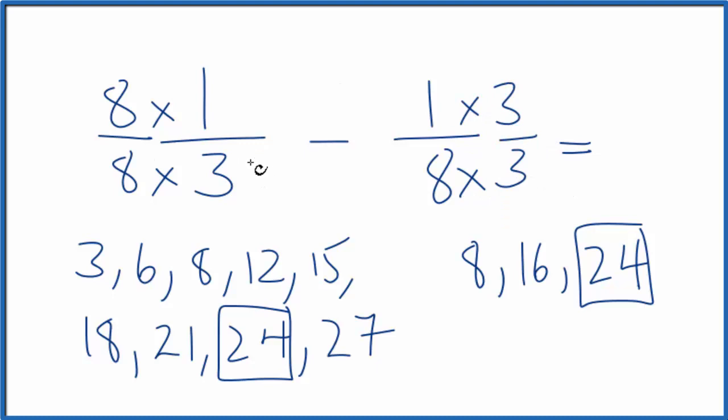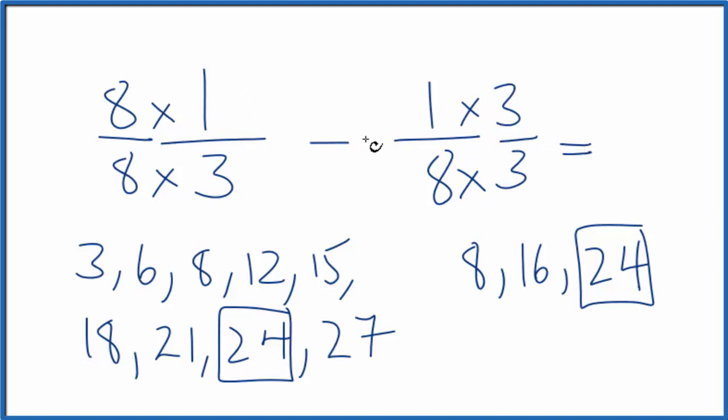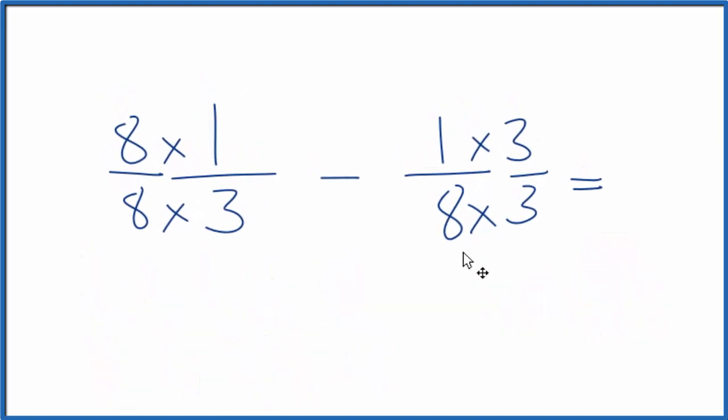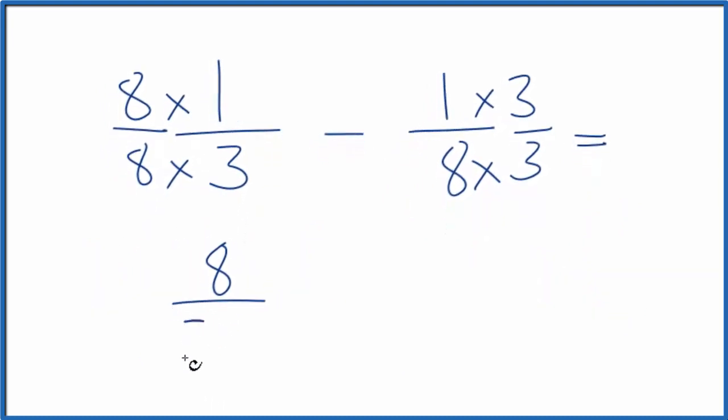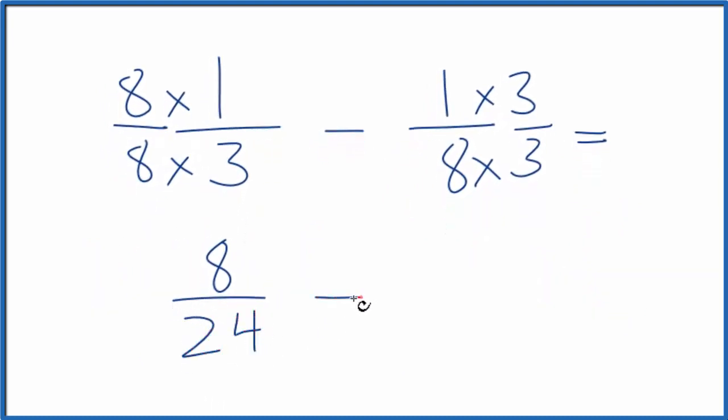So now we can do our multiplication and then subtract the fractions one-third minus one-eighth. 8 times 1 is 8. 8 times 3, that's 24. So there's our denominator, minus 1 times 3, that's 3. 8 times 3 is 24.